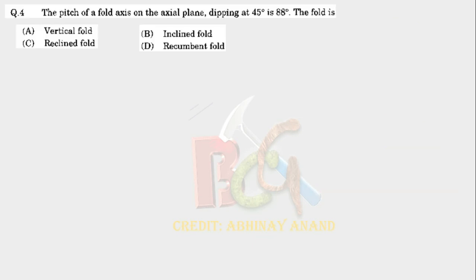Let's look at our question. How easy is this question? The pitch of a fold axis on an axial plane dipping at 45 degrees is 88 degrees. Now, if we know the pitch, we can determine the plunge. If we know the plunge, we can determine whether it is a vertical fold, an inclined fold, or a reclined fold. Look at the flute diagram.